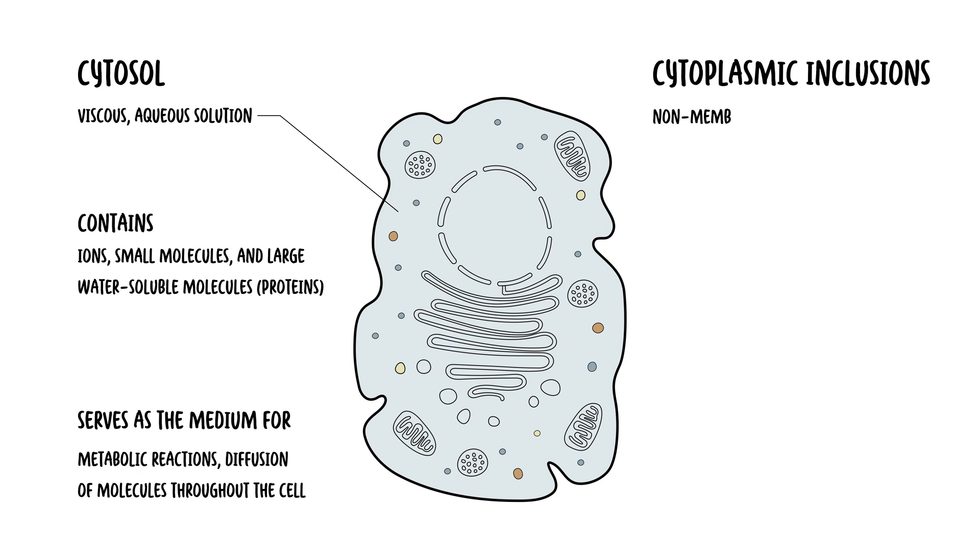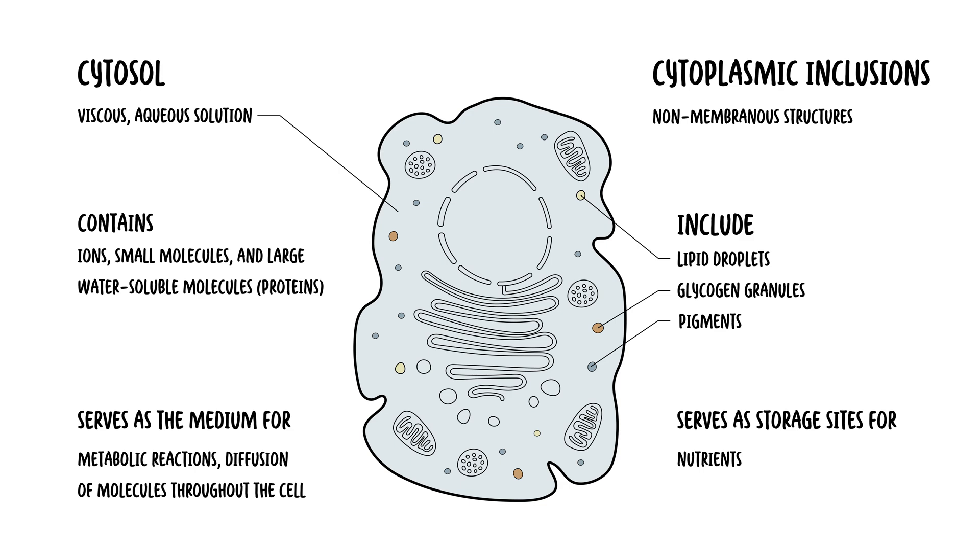Cytoplasm inclusions are non-membranous structures that include lipid droplets, glycogen granules and pigments. Some of these serve as storage sites for nutrients, such as glycogen and lipids, as well as other substances.